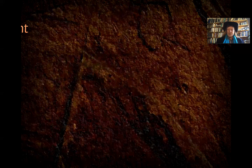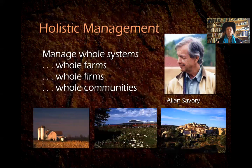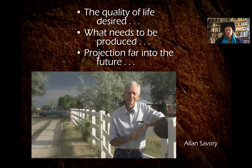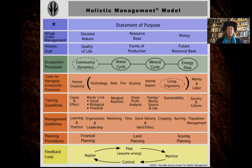Holistic management is the work of Alan Savory who said you have to manage whole systems, whether it be a farm, a company, or a community. He said: what is the quality of life that you desire? What needs to be produced to meet that quality of life? And then project that far into the future — this is the approach that will enable a manager to create an enduring system. They have a model of the tools you walk through to develop a holistic context within which you can manage whatever system it is that you're dealing with.